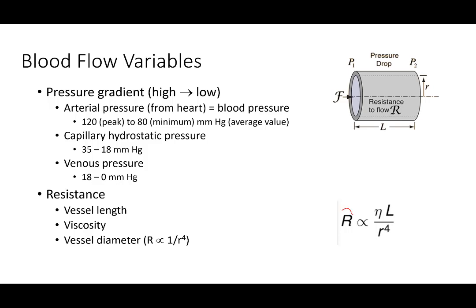Resistance is what opposes flow. The three main factors are vessel length, viscosity — how liquidy or sludgy the blood is — and vessel diameter. In a human, we can't really change vessel length, and in most cases we can't change blood viscosity. So the only things we can really change are vessel diameter — via vasodilation or vasoconstriction of the tunica media — and how much the heart pushes to create a pressure gradient.